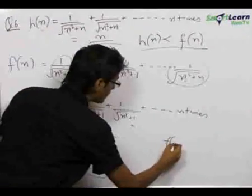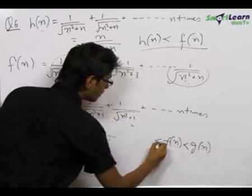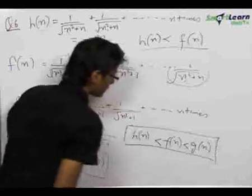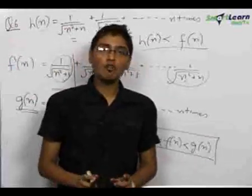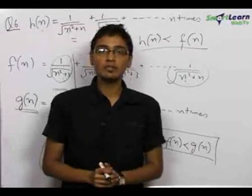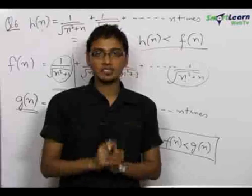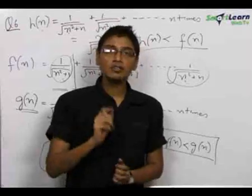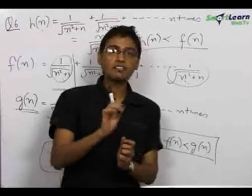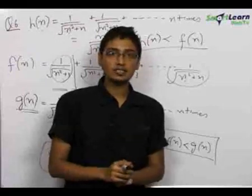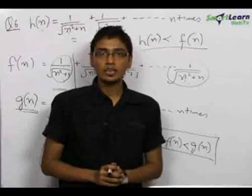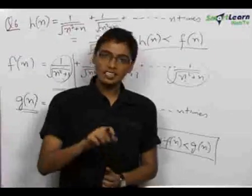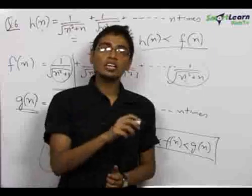So f(n) is sandwiched between g(n) and h(n), which gives us a hint of the sandwich theorem. In the sandwich theorem, if we want to find the limit of a function f, we find two other functions g(x) greater than f(x) and h(x) smaller than f(x), such that the limit of g(x) equals the limit of h(x) at the given point.